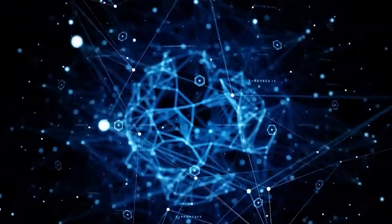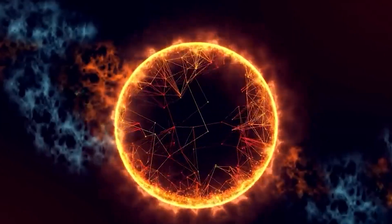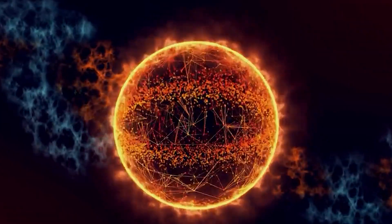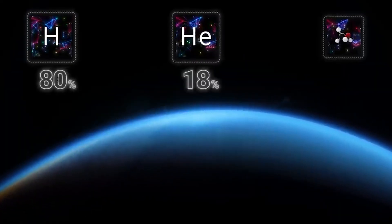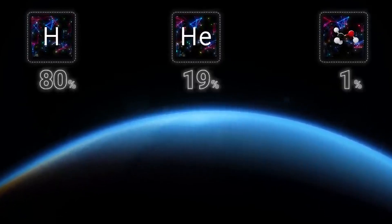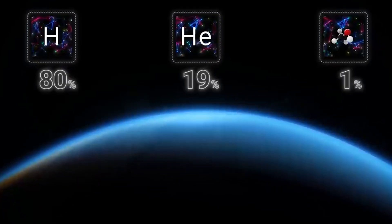The atmosphere of Neptune is made up of 80% hydrogen, 19% helium, and about 1% methane, along with trace amounts of other gases.